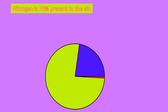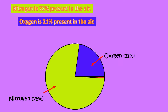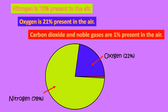Nitrogen is 78% present in the air. Oxygen is 21% present in the air. Carbon dioxide and noble gases are 1% present in the air.